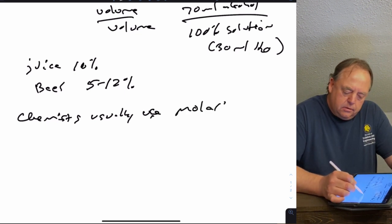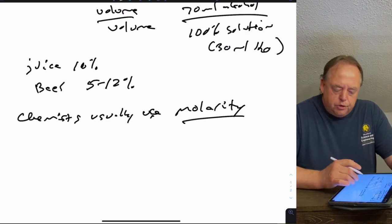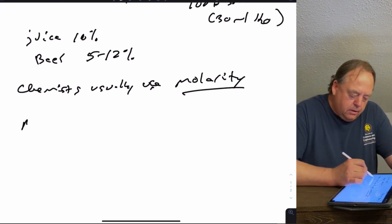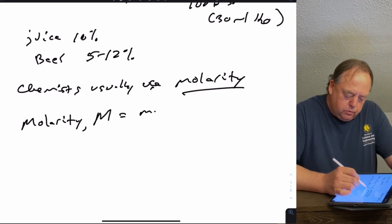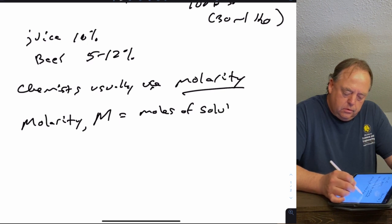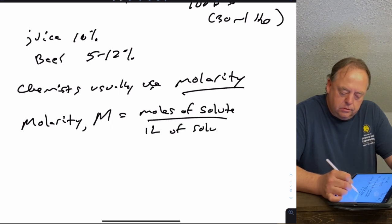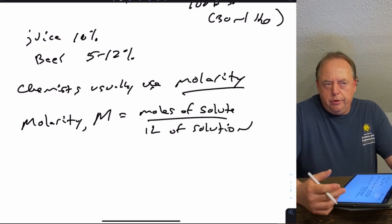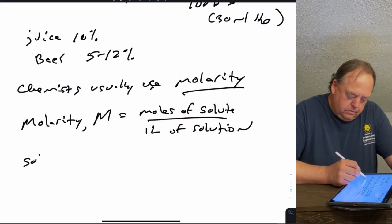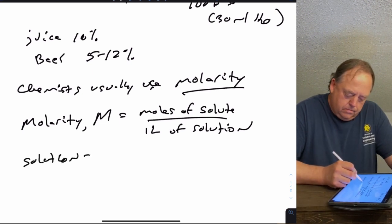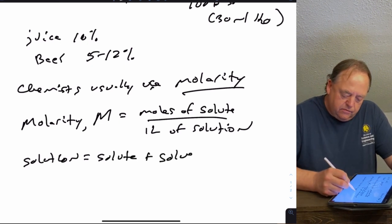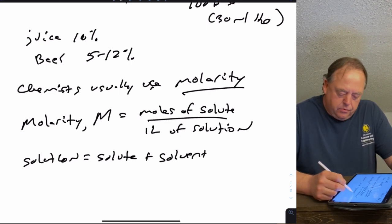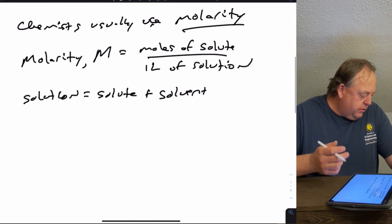Chemists usually use what's known as molarity to report concentration. Molarity is given the symbol capital M, and it equals moles of solute over the total liters of solution. The solute is whatever you're dissolving, the solvent is whatever you're dissolving it in, and together they make the solution.